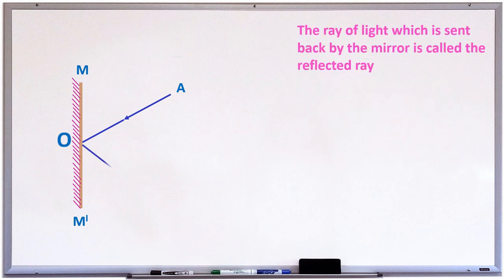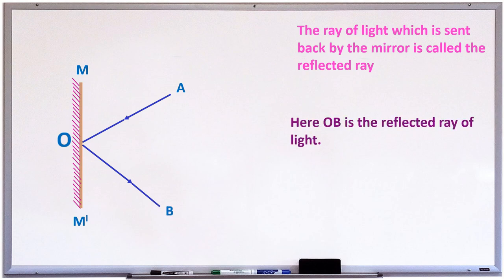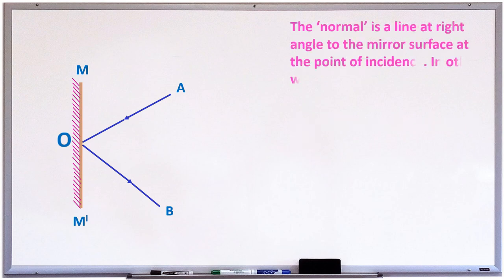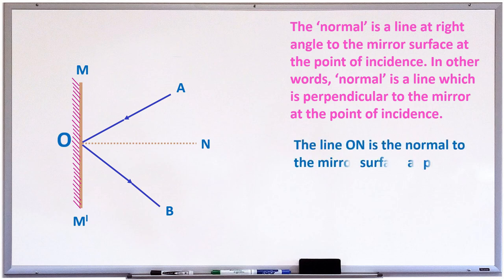The ray of light which is sent back by the mirror is called the reflected ray. Here, OB is the reflected ray of light. The normal is a line at right angle to the mirror surface at the point of incidence. In other words, the normal is a line which is perpendicular to the mirror at the point of incidence. The angle M-O-N is a right angle and angle N-O-M' is also a right angle. Here, the line O-N is normal to the mirror surface at point O.